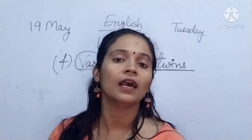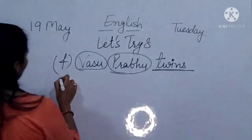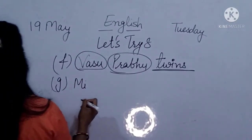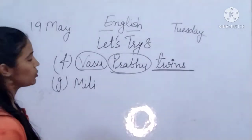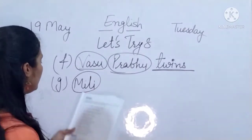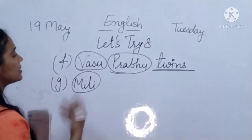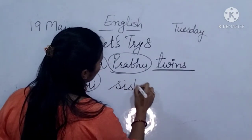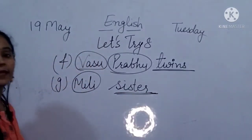Sentence G: Millie plays with her sister. Millie is the name of a girl, so circle Millie — it is a proper noun. And sister is a common noun — underline it.